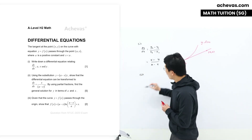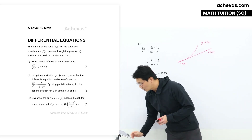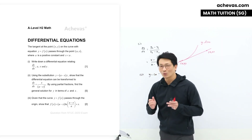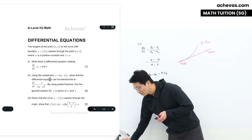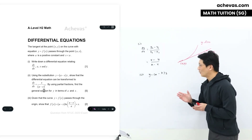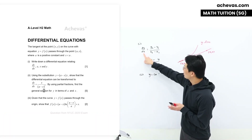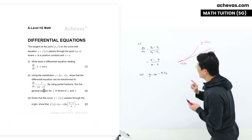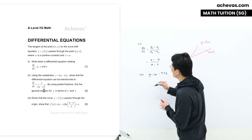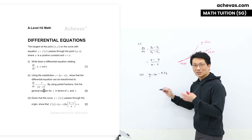For Part 2 of this question, it says: using the substitution y = (a - x)z, show that the differential equation can be reduced to dz/dx = x over (a - x) squared. Looking at the final expression we need to simplify to, we can see that somehow all the y's have been replaced away. So in this substitution, we are supposed to replace all the y's, including the dy/dx term.